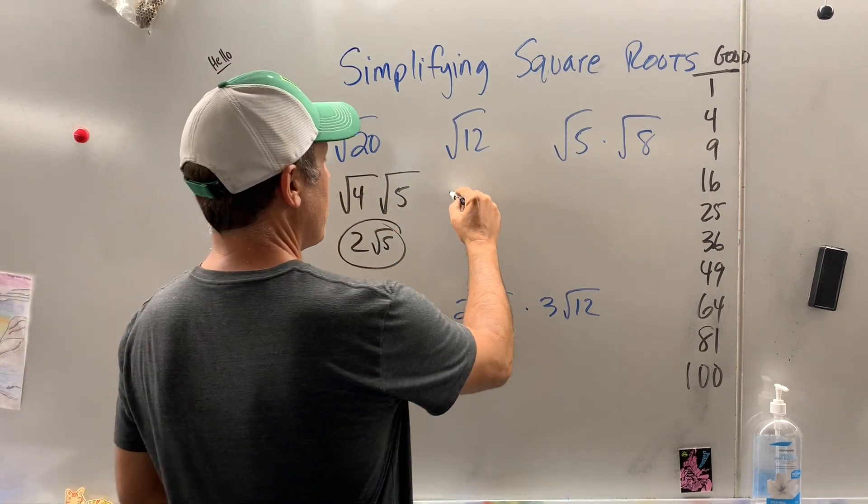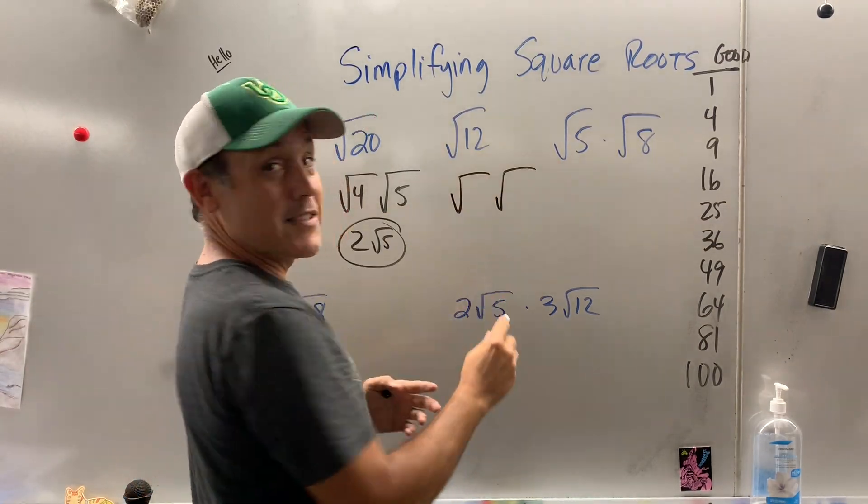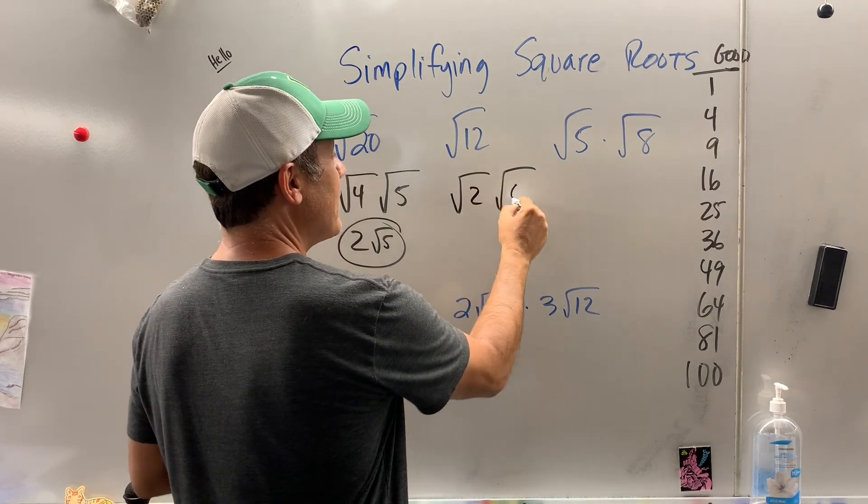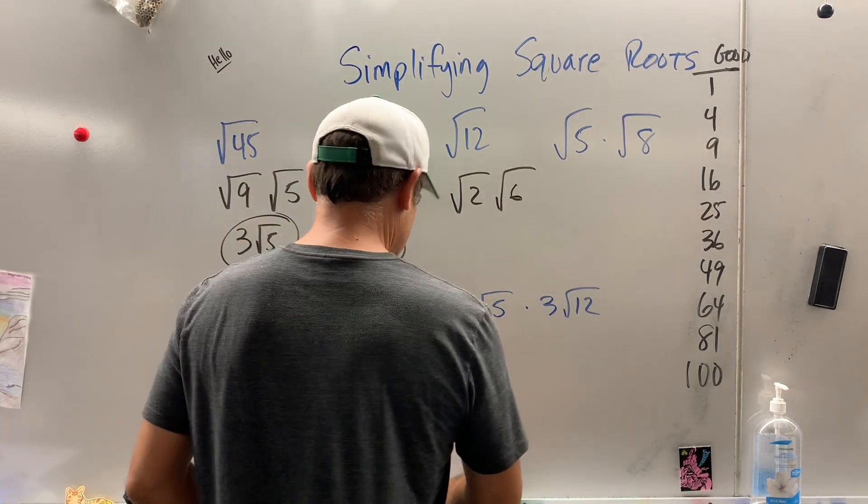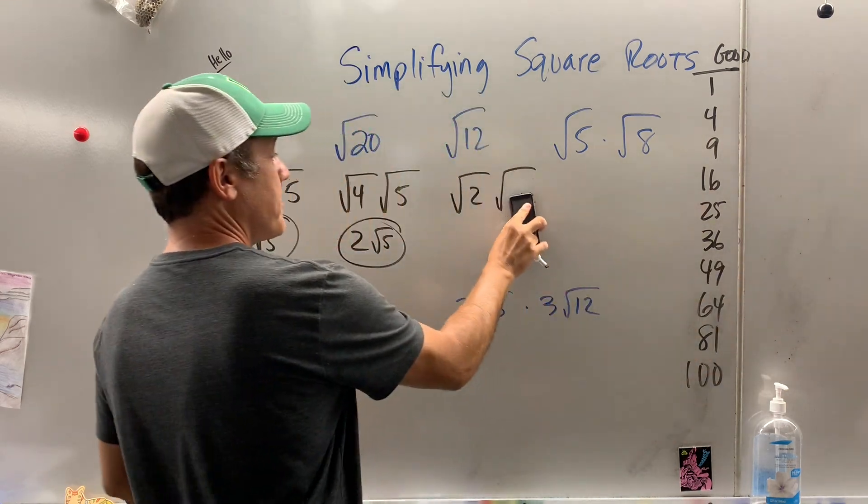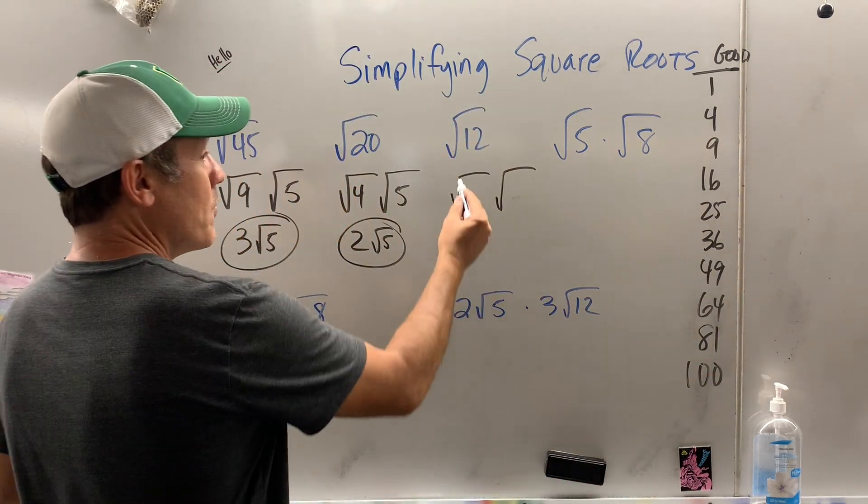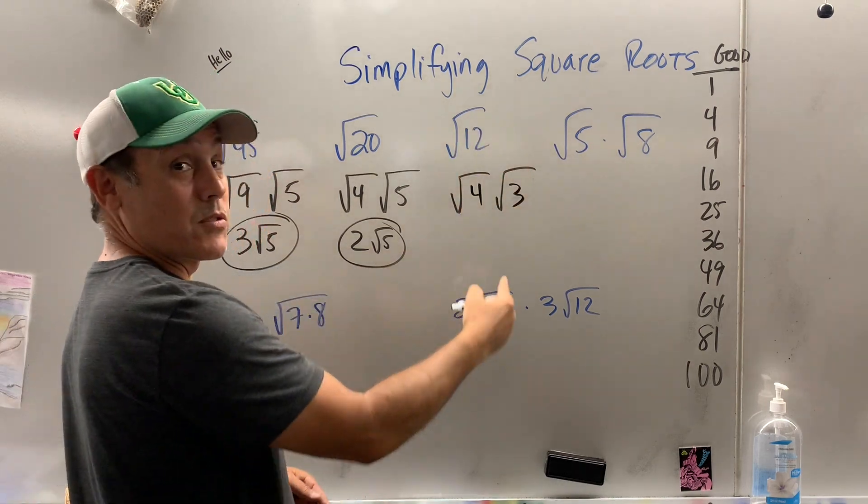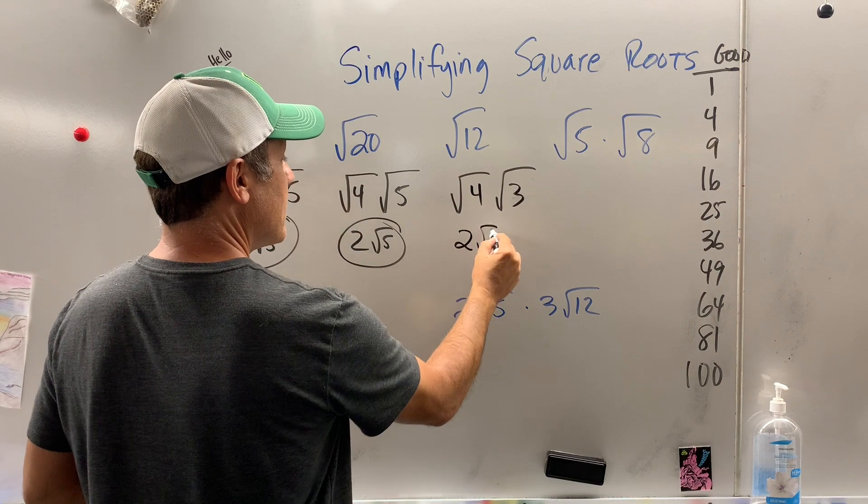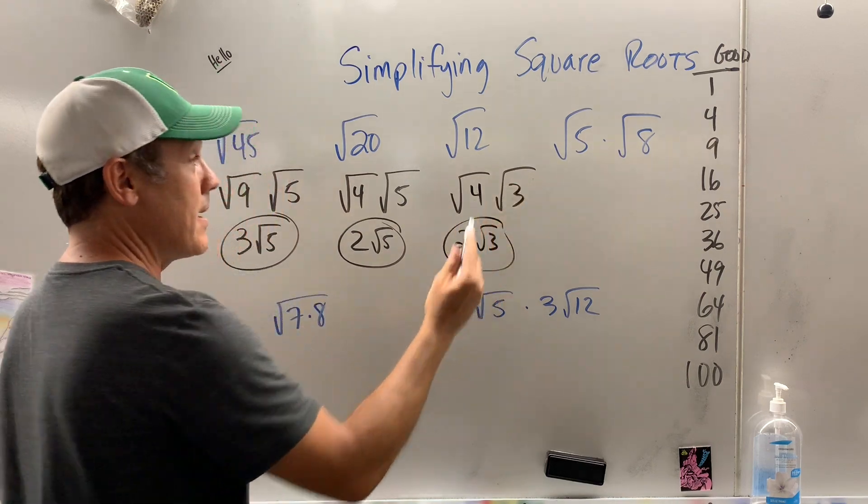Let's do another one. Square root of 12. Now, what about the kid that gets all excited and says, oh, 2 and 6. Well, is 2 on my list? No, so it's not right. So let's get the eraser. What number is on my list that's on the good? 4 goes into 12. 4 times 3. What's the square root of 4? 2. Just bring the bad down.